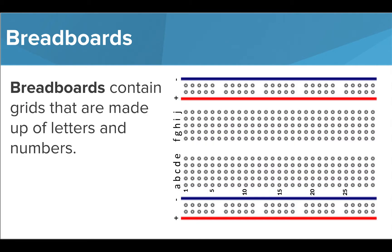Let's take a look at how breadboards are organized. The center of our breadboard contains a grid that is made up of letters and numbers, similar to a spreadsheet. These letter-number combinations give us the location of each specific port on the breadboard.